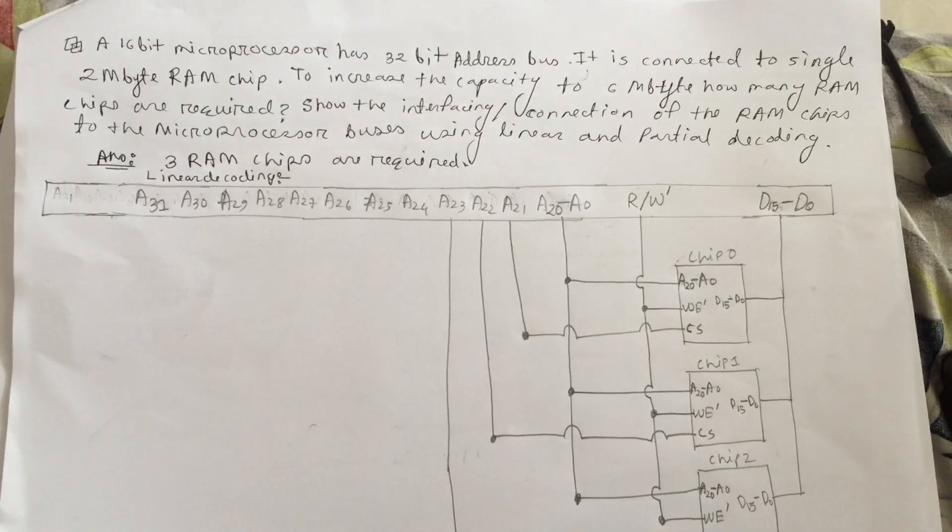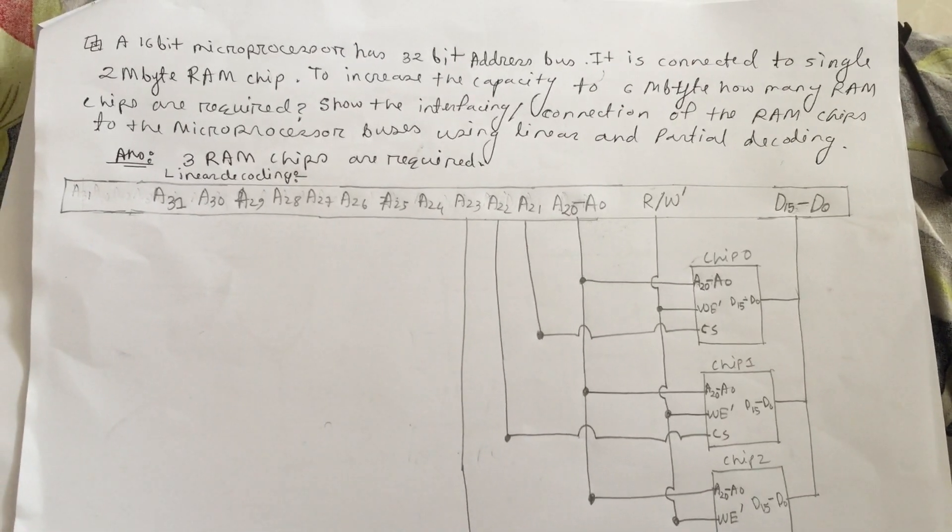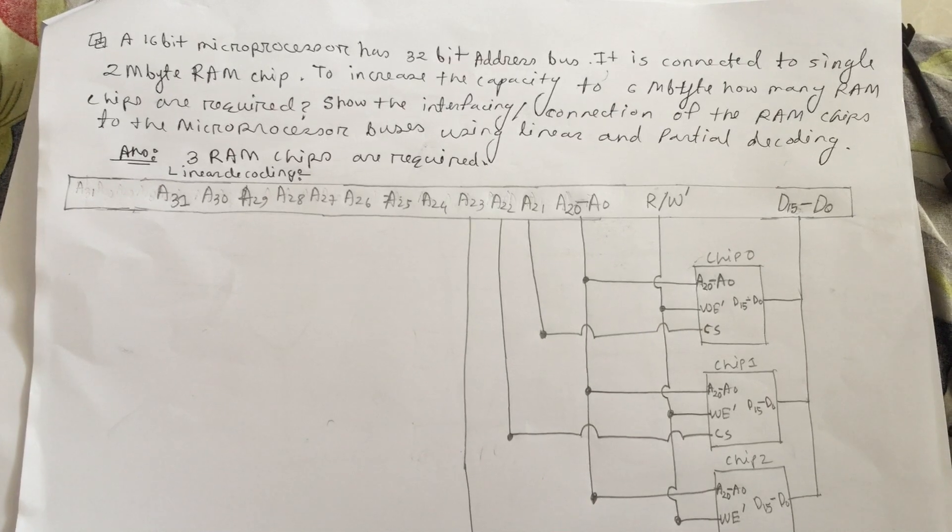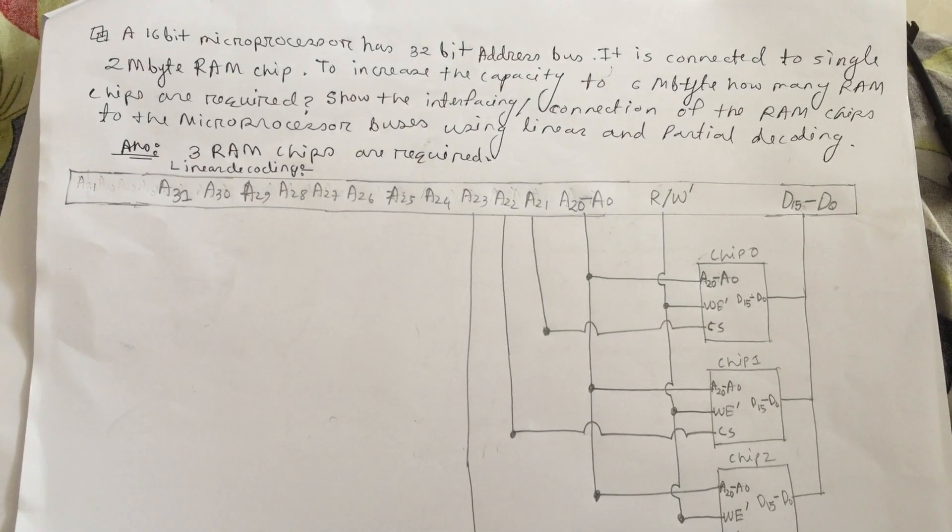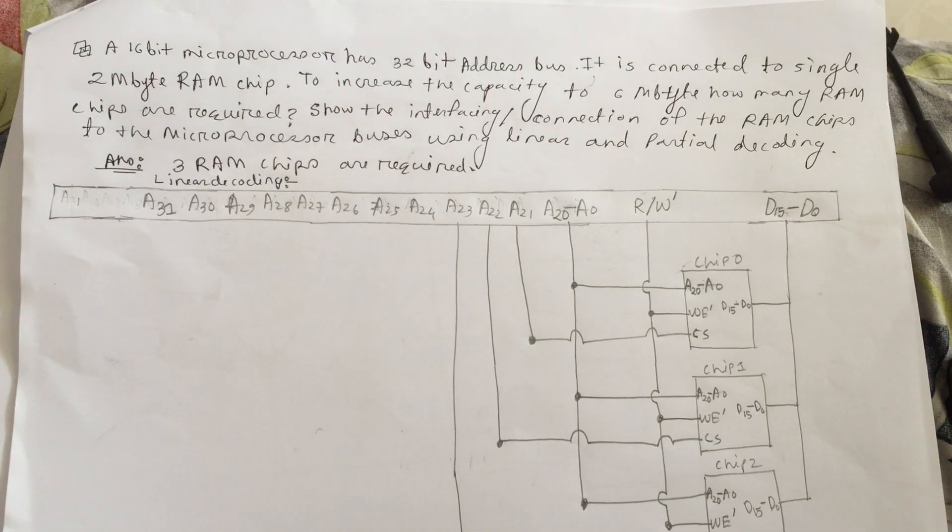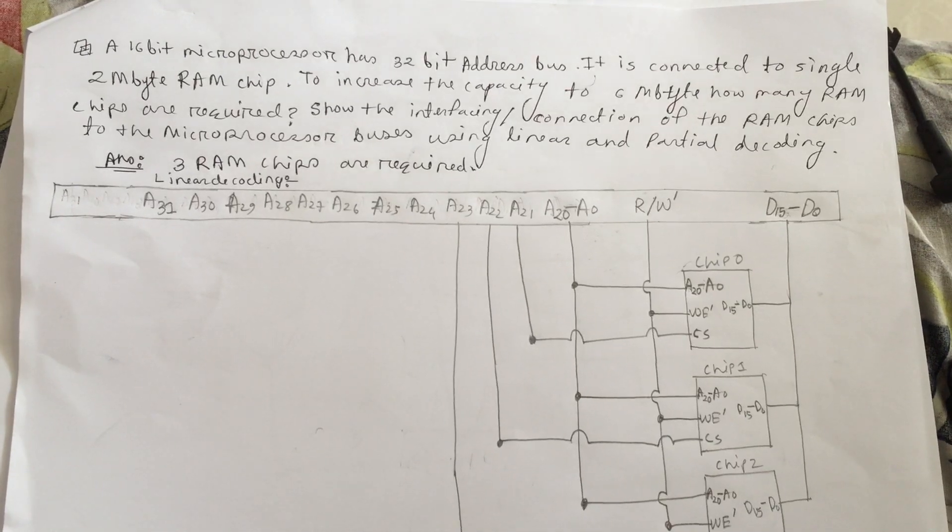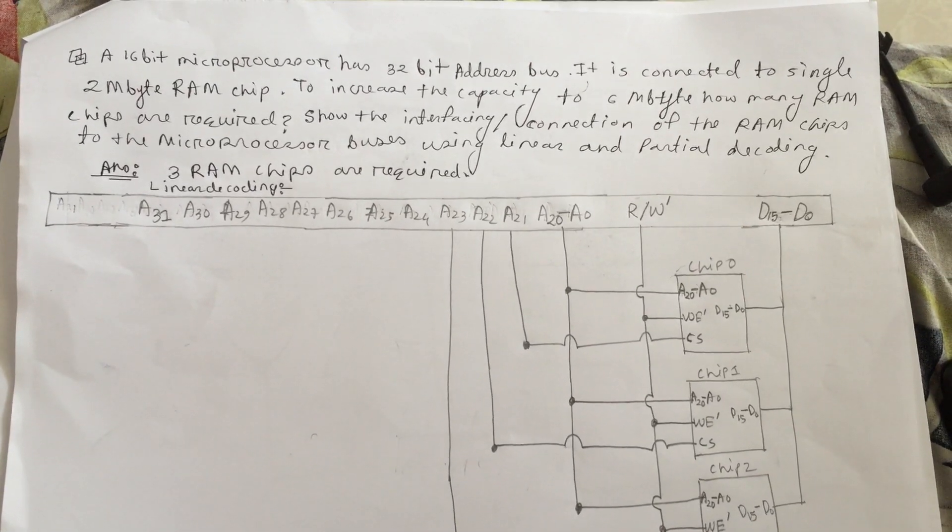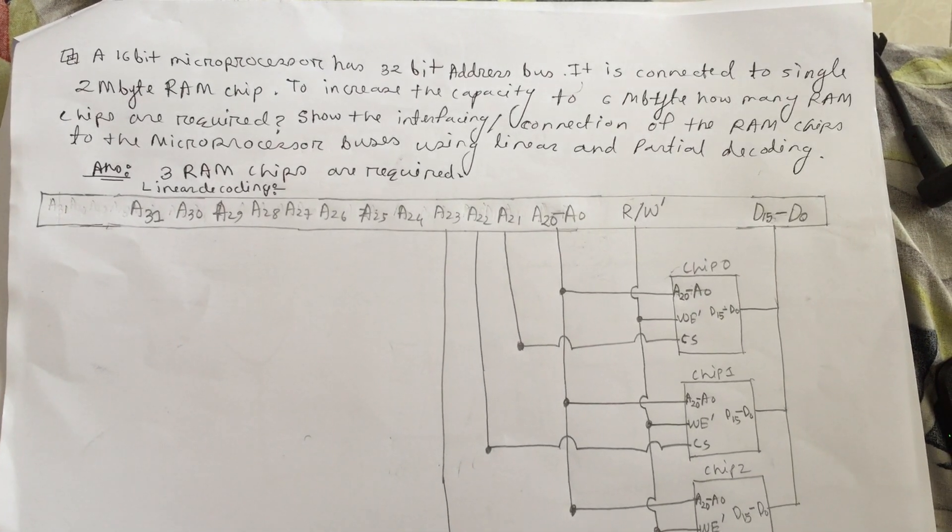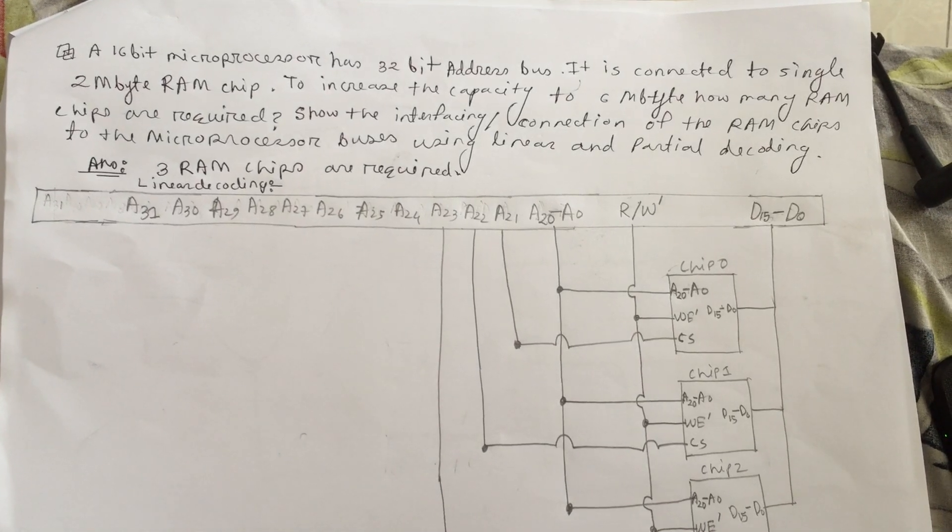A 16-bit microprocessor has 32-bit address bus and it is connected to single 2 megabyte RAM chip. To increase the capacity to 6 megabyte, how many RAM chips are required? Show the interfacing connection of the RAM chips to the microprocessor buses using linear and partial decoding.